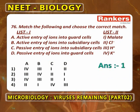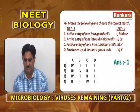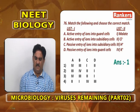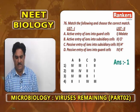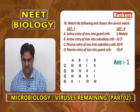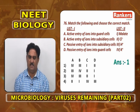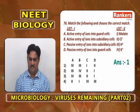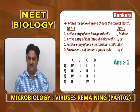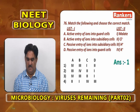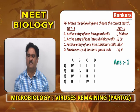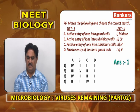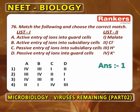Match the following — active vs. passive entry of ions: Active entry of ions into guard cells is K⁺ ions. Active entry of ions into subsidiary cells is H⁺. Passive entry of ions into subsidiary cells is malate ions. Passive entry of ions into guard cells is Cl⁻ ions. Answer: A4, B3, C1, D2.